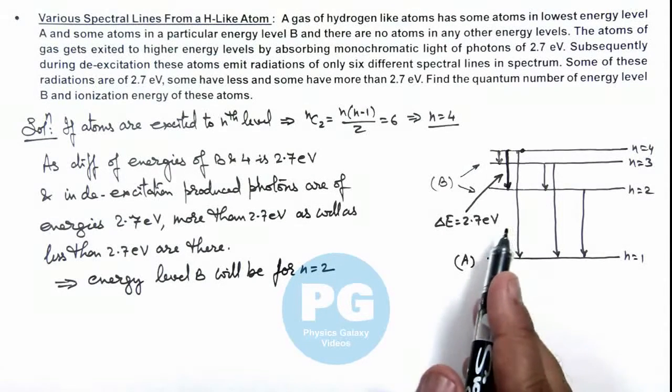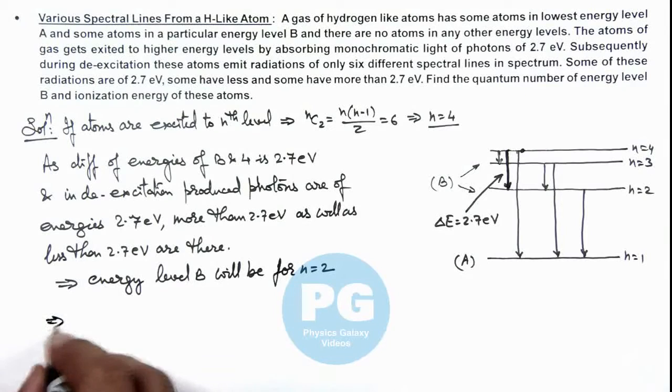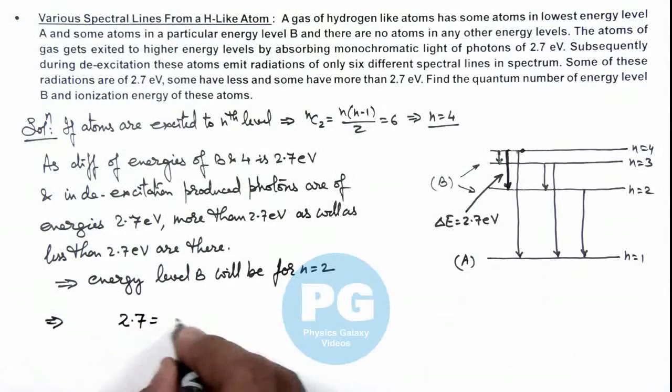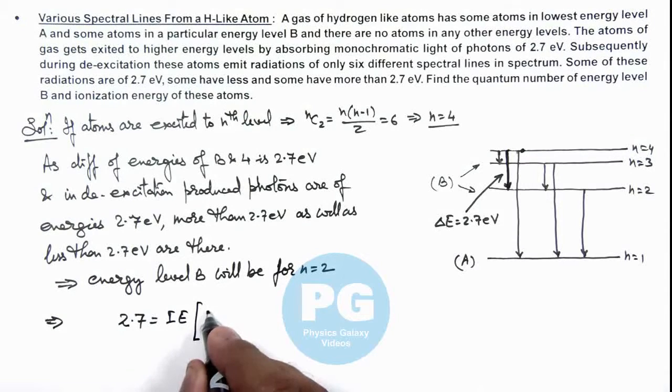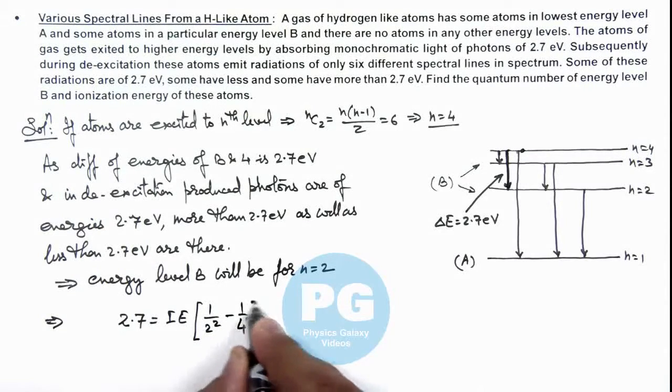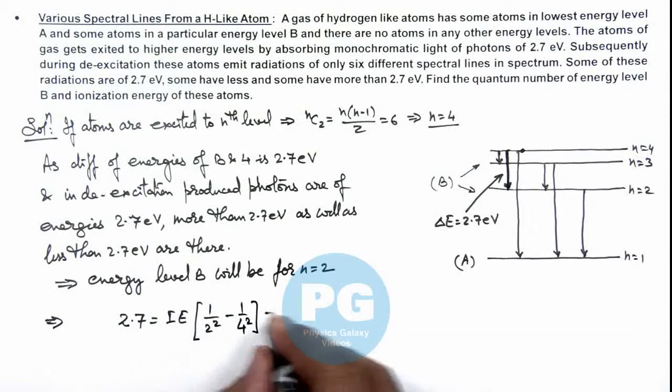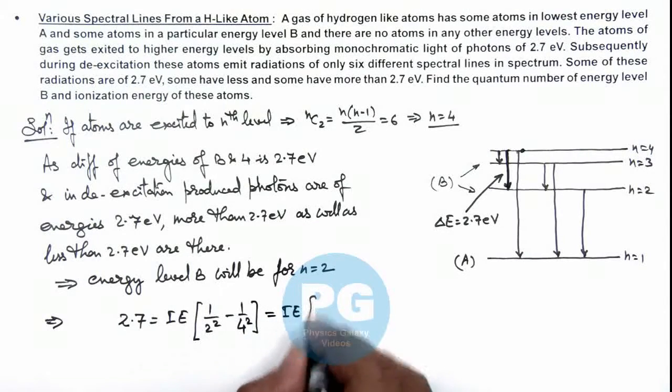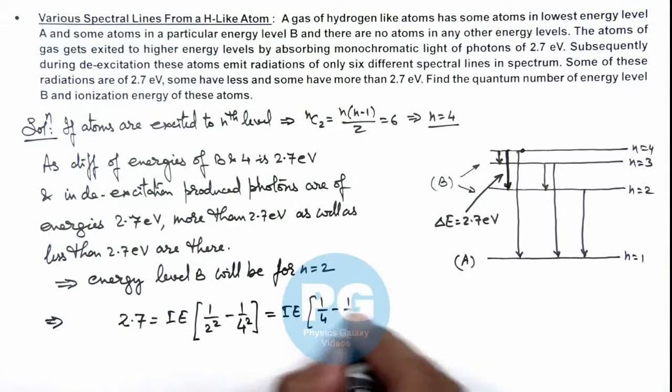So here we can write 2.7 should be equal to ionization energy of the gas, which is actually 13.6 Z square multiplied by 1 by 2 square minus 1 by 4 square, and this is ionization energy multiplied by 1 by 4 minus 1 by 16.